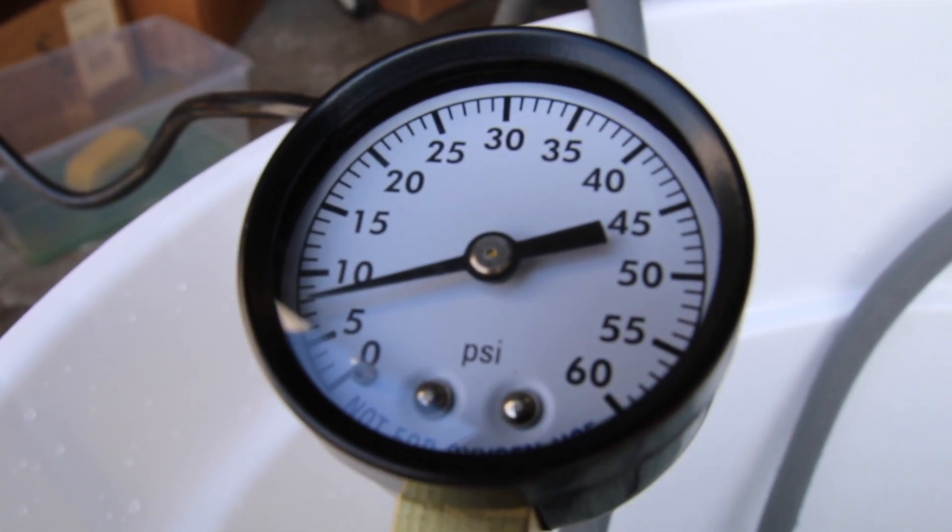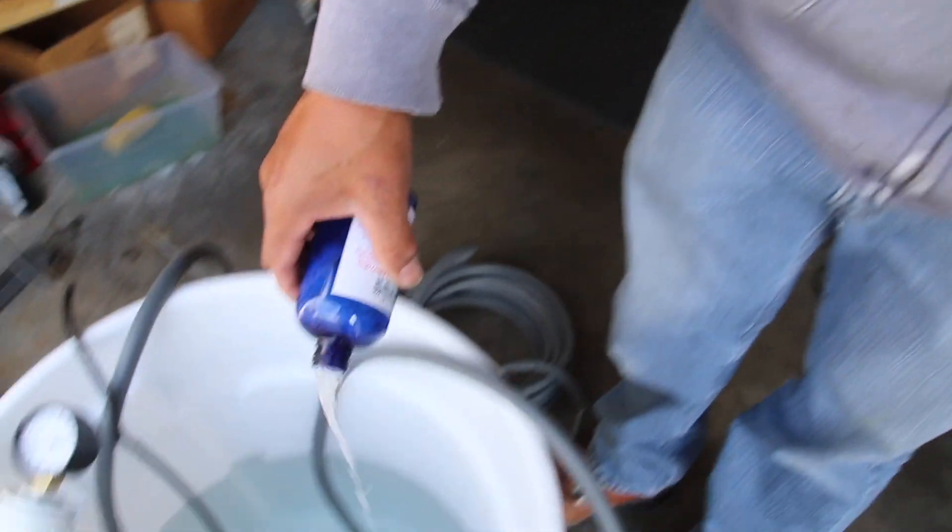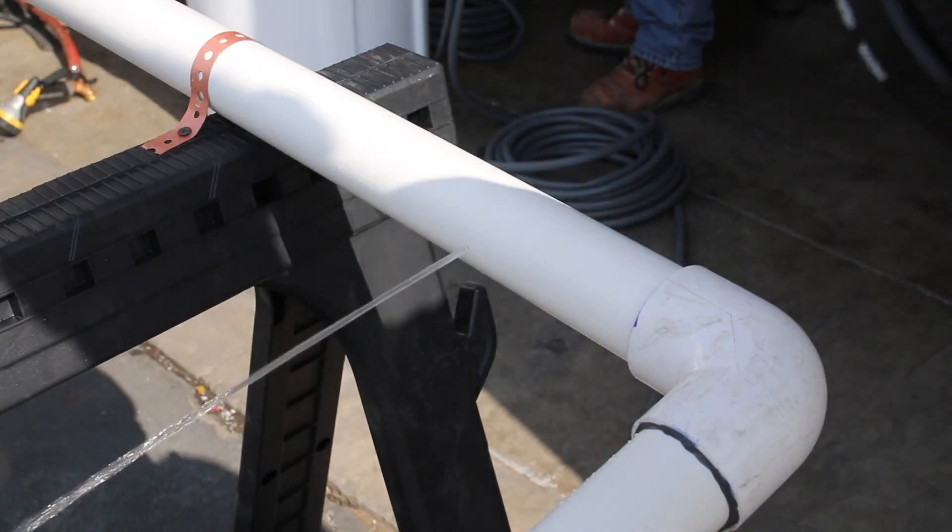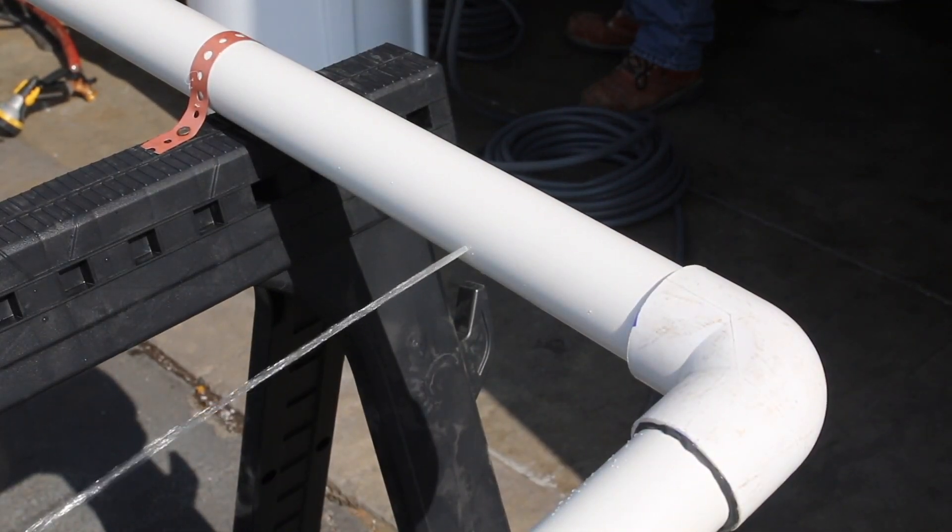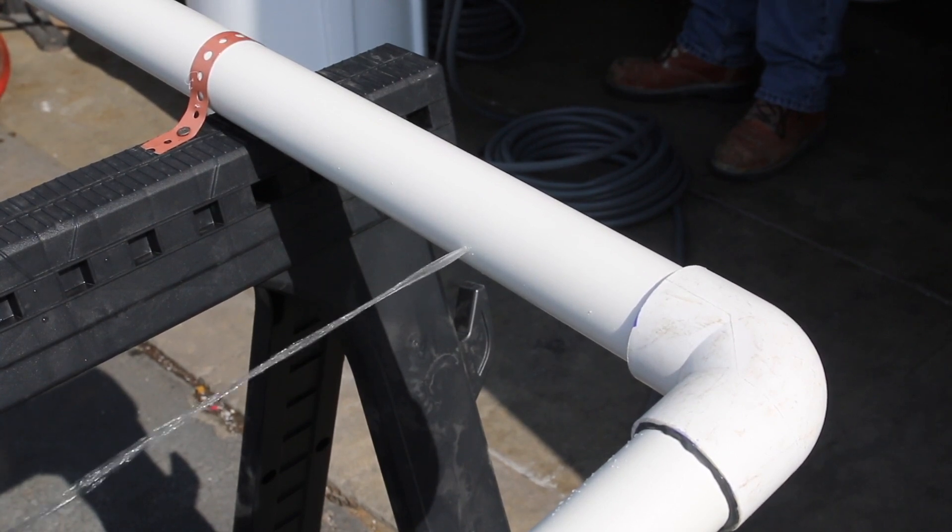Once we see the pressure drop, then we're going to set that water recirculating again. You can see the valve's open, and we pour in Part A. Now, Part A is going to take a while, but it consists of some solids and a polymer to go in, block the leak, and seal the leak.